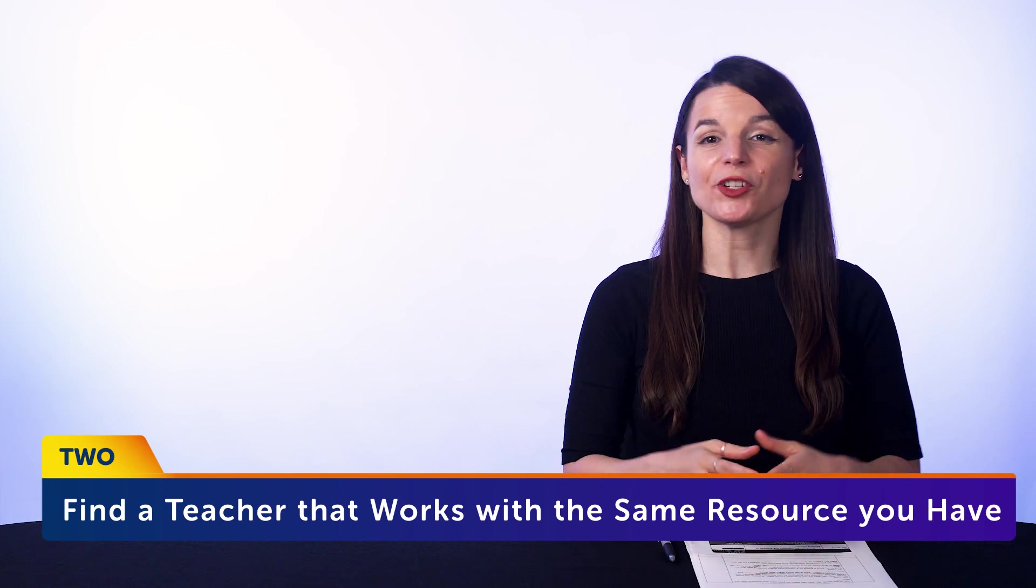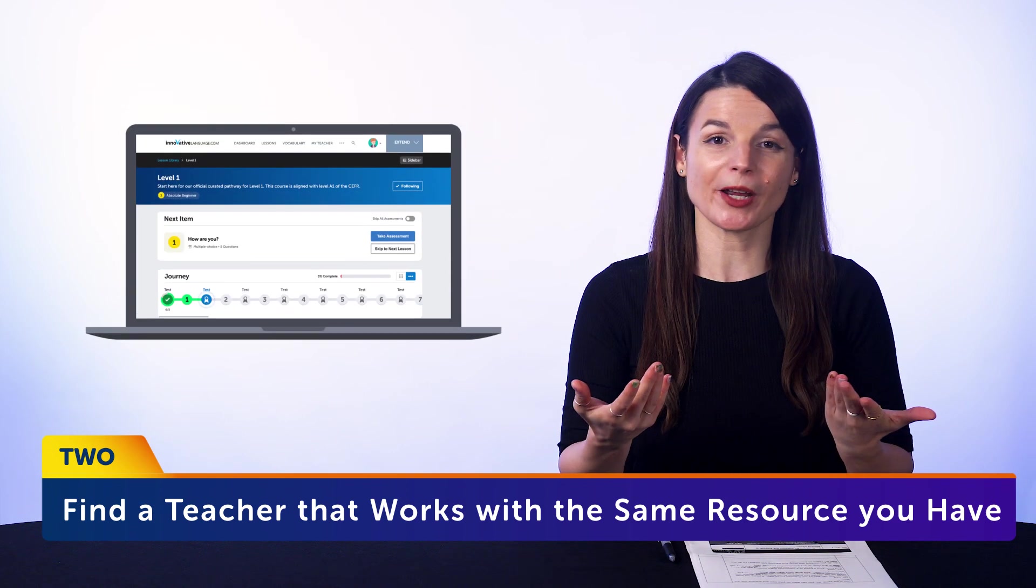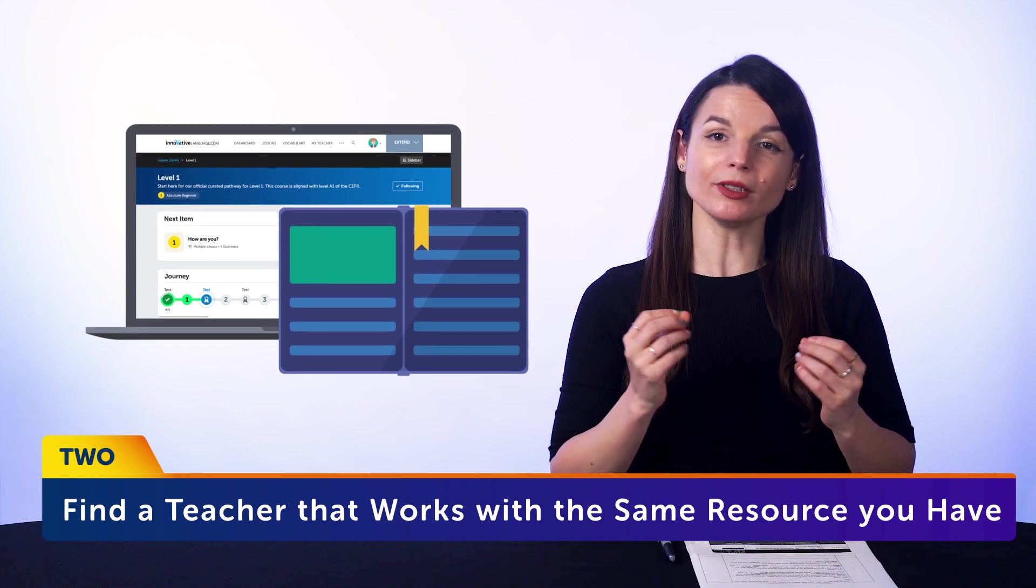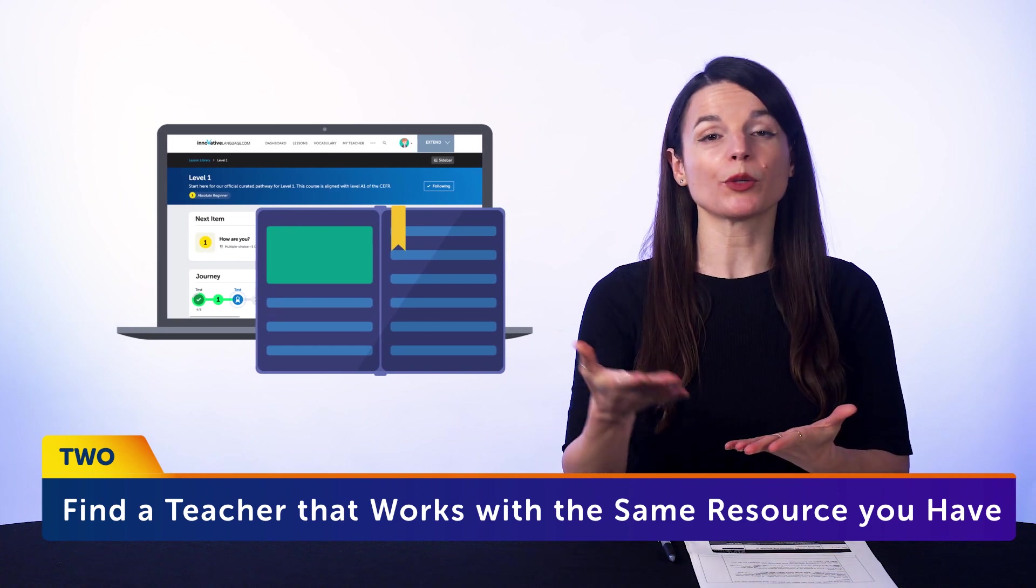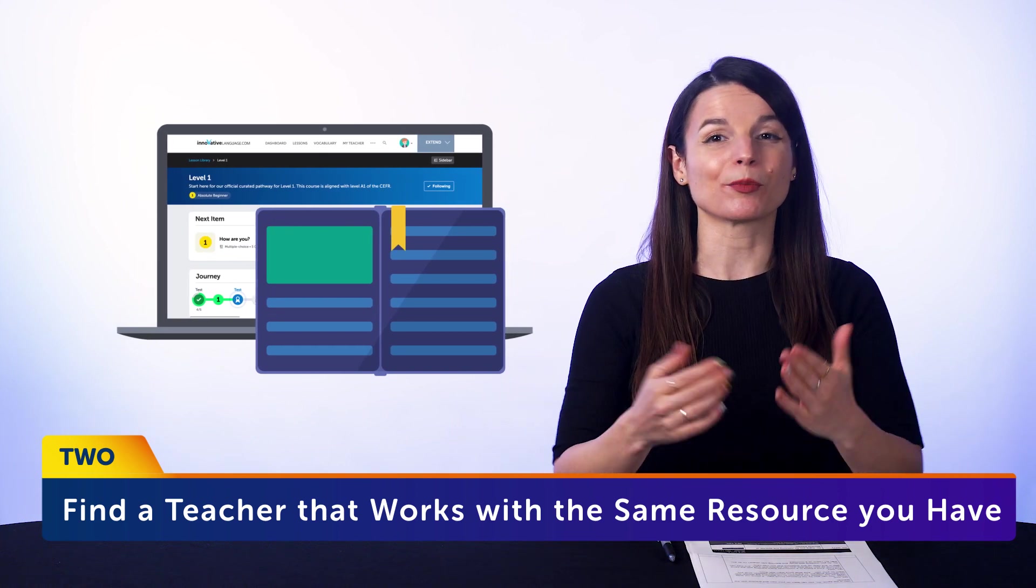2. Find a teacher or tutor that works with the same resource that you have. Whether it's our program or a textbook. Have the tutor see what you're studying so they can match. And it's important that there's overlap. That what you're learning with the tutor, and on your own, is the same. So you can learn on your own and practice with the teacher.